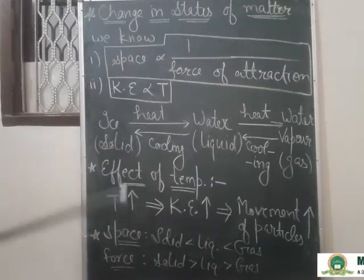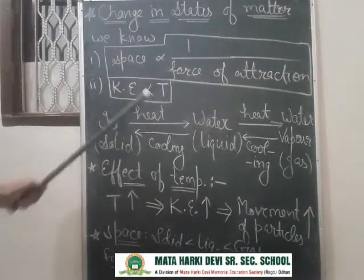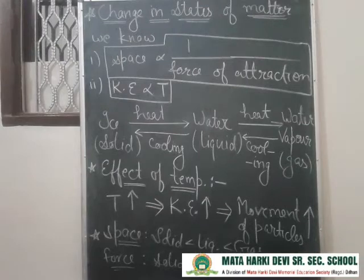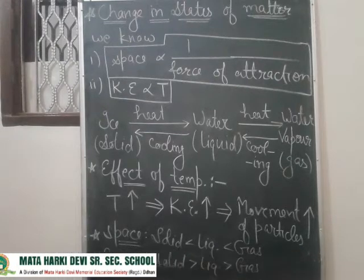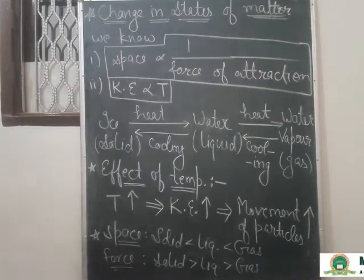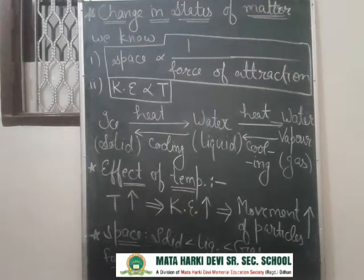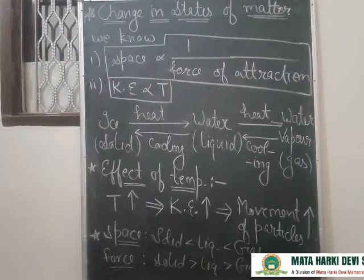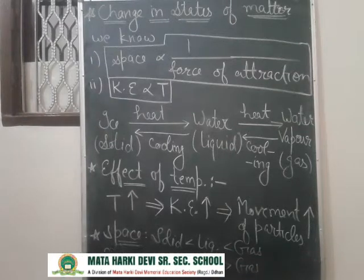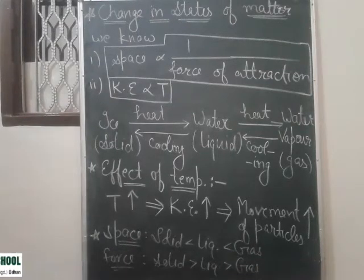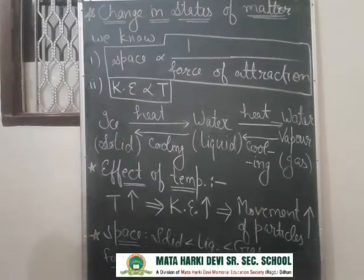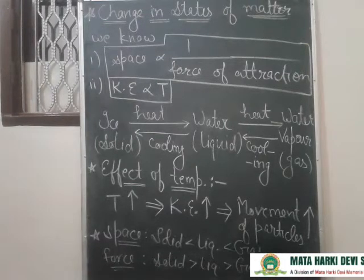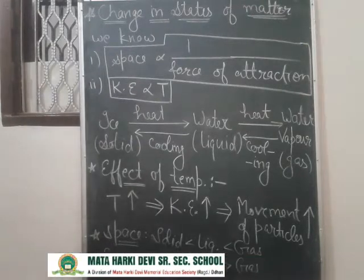The second assumption is: kinetic energy of particles is directly proportional to temperature. That means if temperature is increasing — if you are providing heat to an object and increasing its temperature — then the particles gain energy from the temperature, and they use that energy as kinetic energy. The motion of particles becomes faster, movement becomes rapid, more freely they can move. Clear? This was the second assumption from our previous classes.